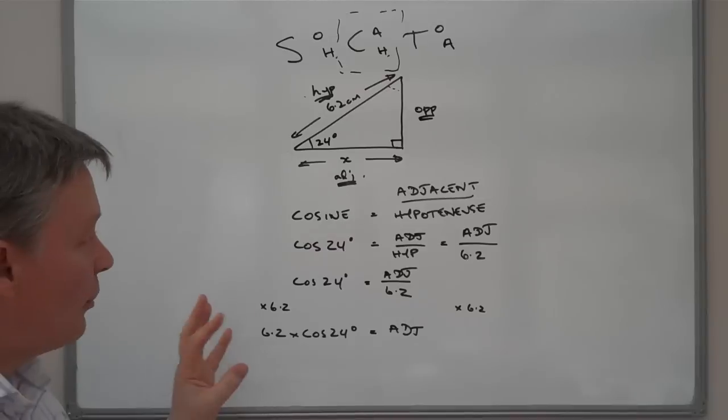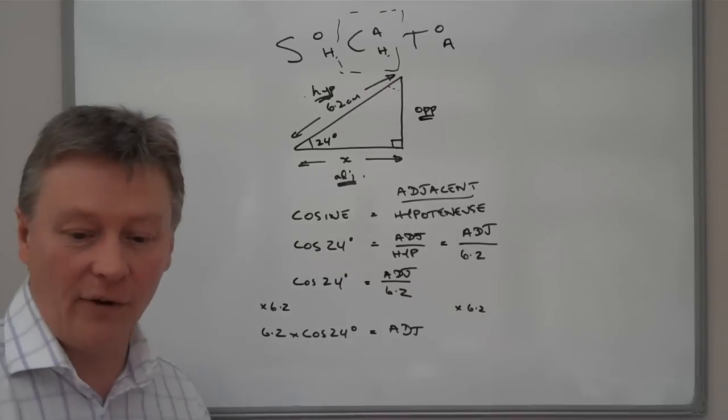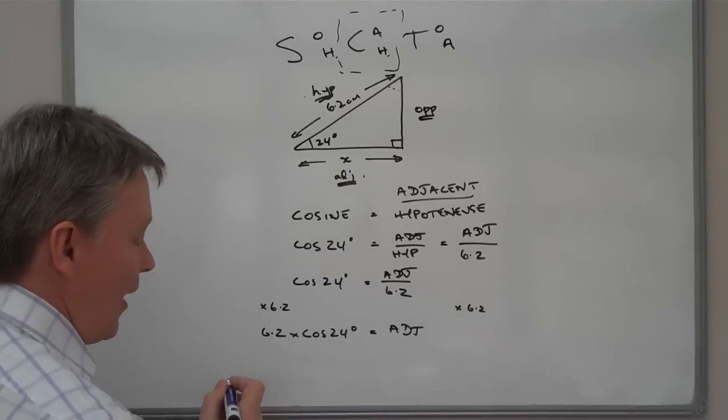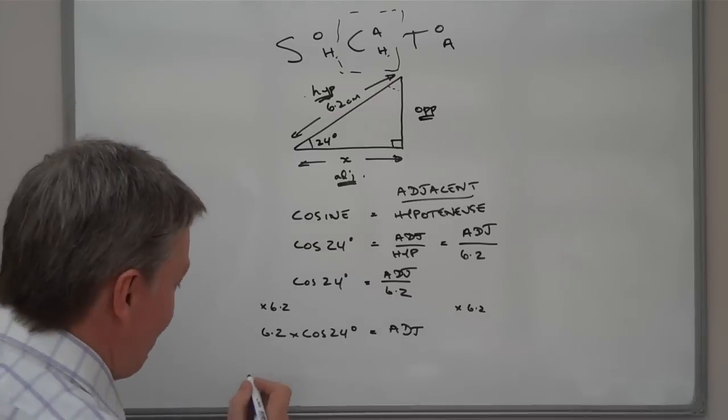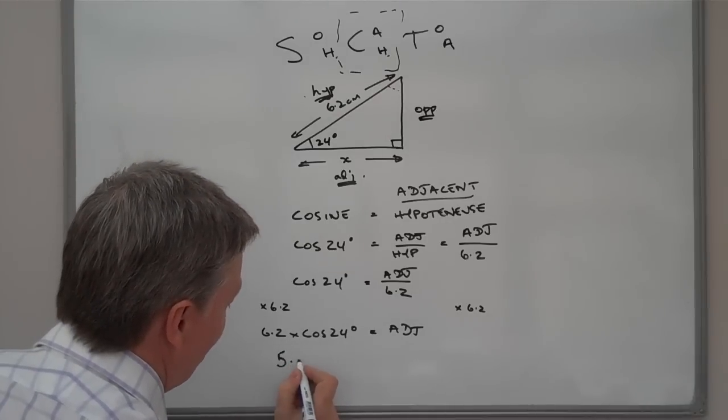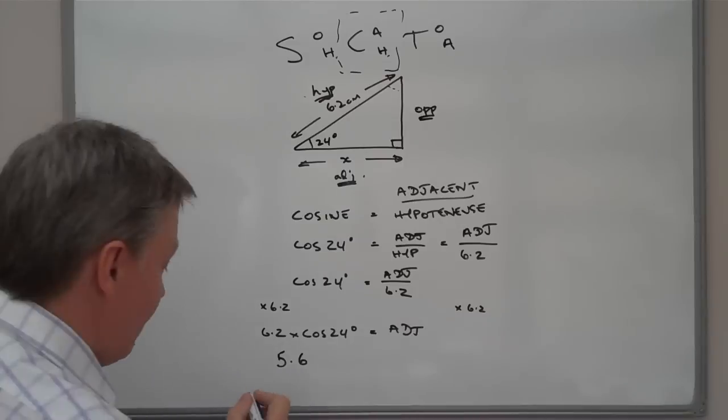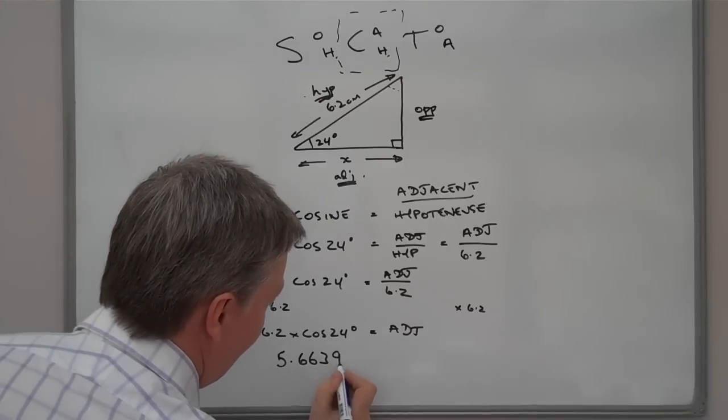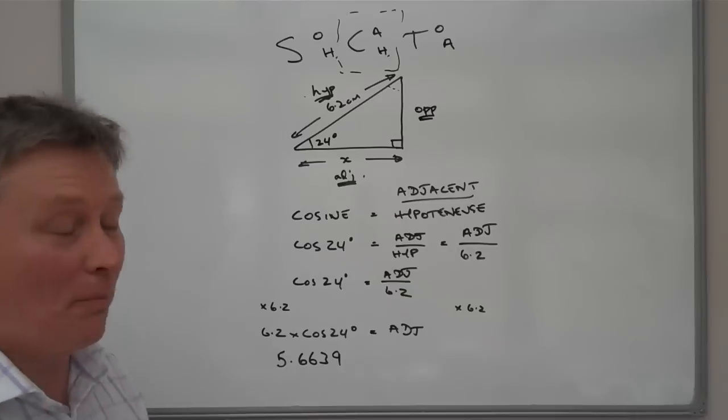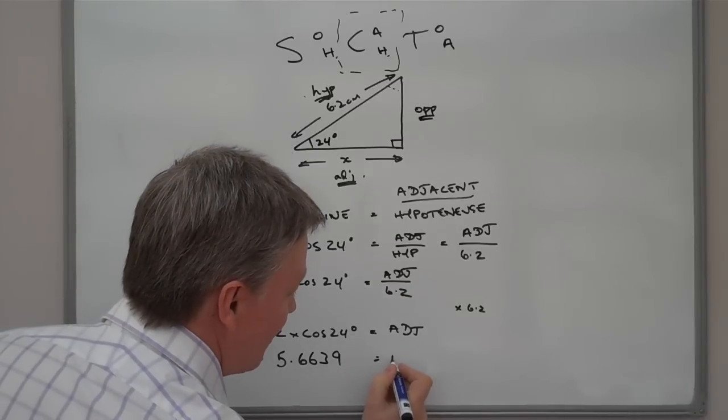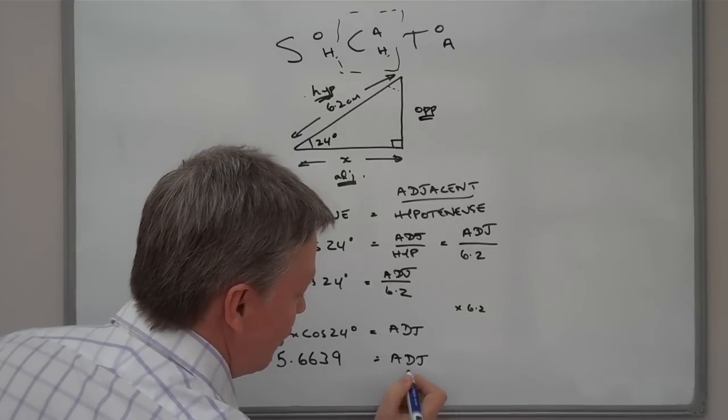So, if I put that into my calculator now, it's going to give me a very long number. And I'm just checking my notes here. It's 5.6639, so on, blah, blah, blah. And that's the value of the adjacent.